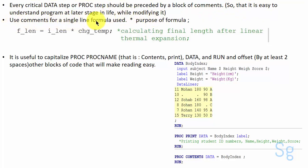Use comments for a single line formula used. As here you can see that we are calculating final length from the formula - initial length multiplied by change in temperature. Correspondingly we have used comments regarding this formula.